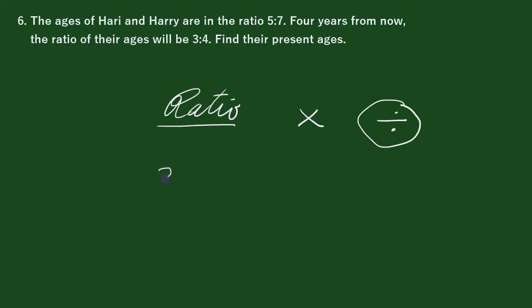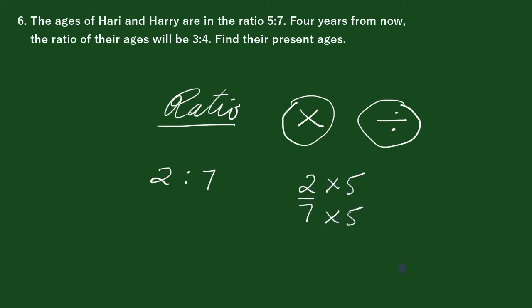The ratio of 2 is to 7. The fraction is to divide by number 2. Number 2 is to multiply. 10 is to 35.